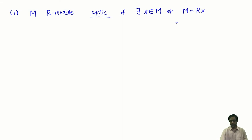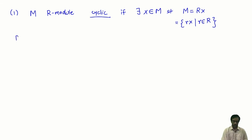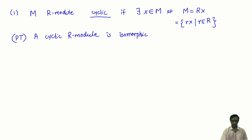In other words, M consists of all scalar multiples of x, that is Rx with r coming from R. If this happens, we call M cyclic or singly generated. Problem 1: Prove that a cyclic R-module is isomorphic to a quotient module R mod I, where I is some left ideal.